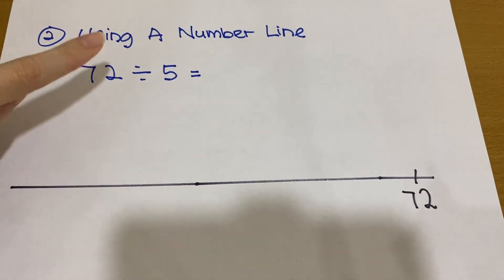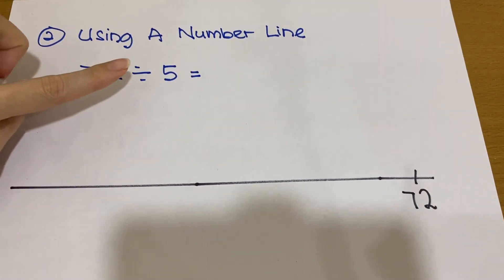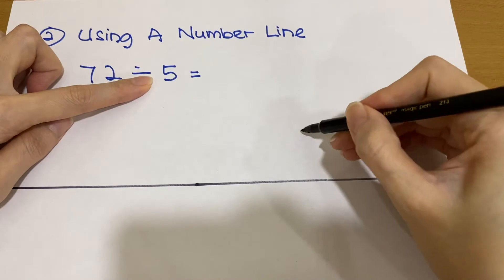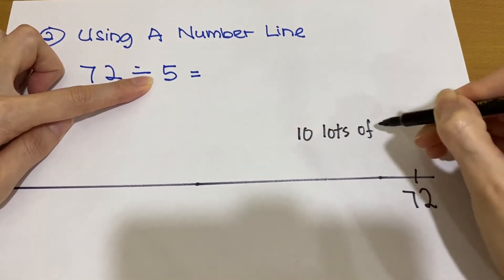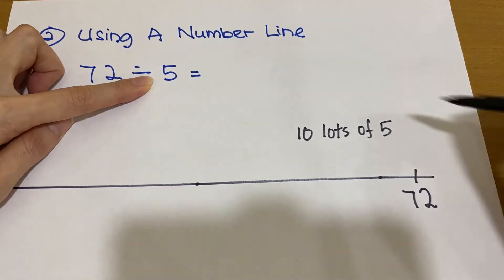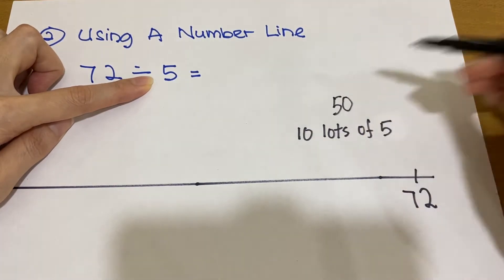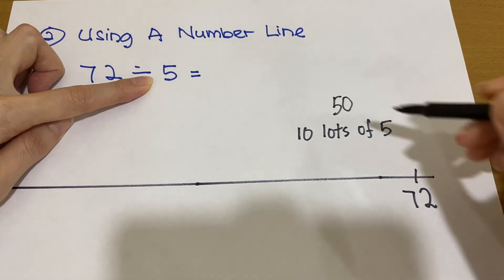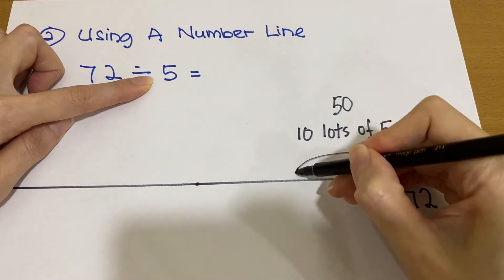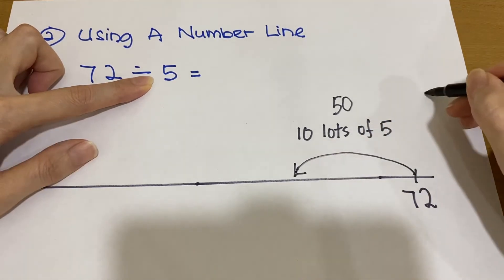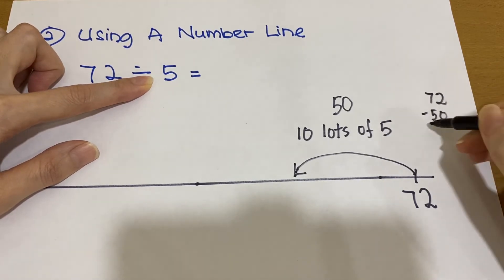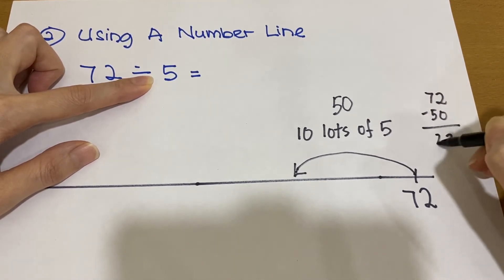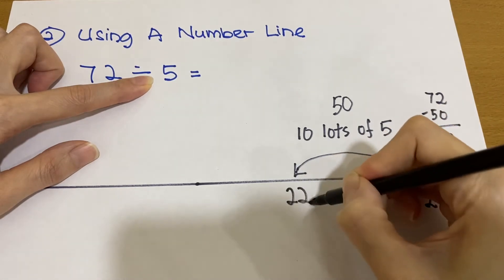We know that 5 times 10 is 50. So we have 10 lots of 5. 10, 5 is 50. So now from 72, we need to go backward 50 step. So 72 minus 50, we will have 22. So we stop at 22 here.